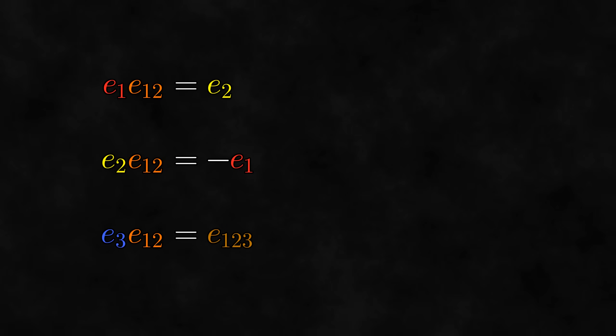Now notice what happens if we swap the orders in these products. e12 times e1 ends up being equal to negative e2, e12 times e2 ends up being equal to e1, and e12 times e3 is simply e123. Notice that the product is not commutative in the first two cases, but it is commutative in the third case. You always have to be careful with the order of the factors in a product in geometric algebra.